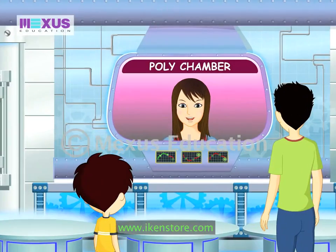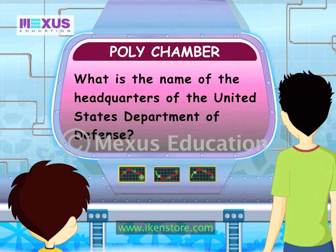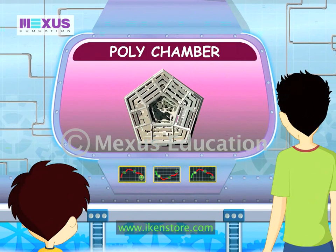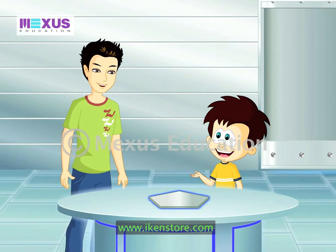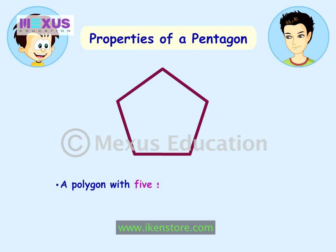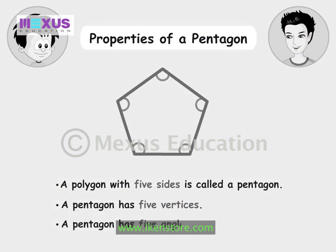Your first question is: What is the name of the headquarters of the United States Department of Defense? It's known as the Pentagon. This shape is called a Pentagon. A Pentagon has five sides, five vertices, and five angles. An angle is formed at each vertex.